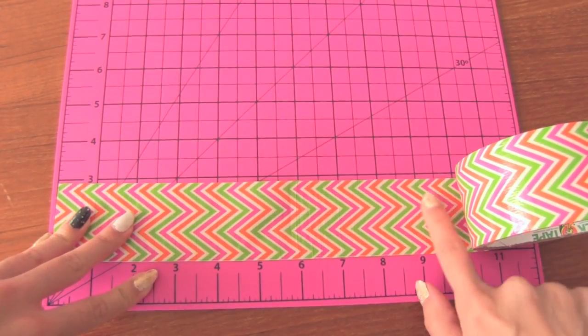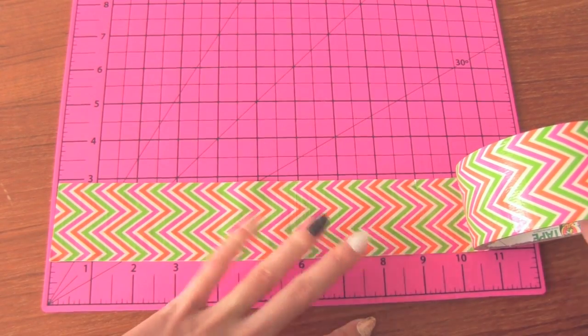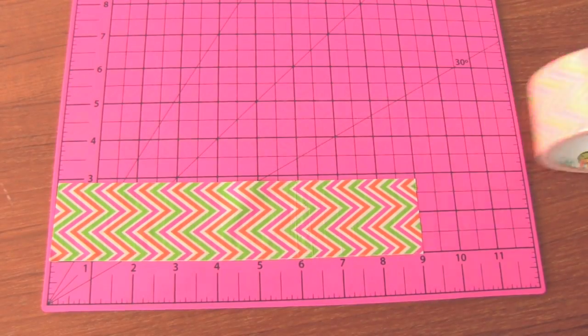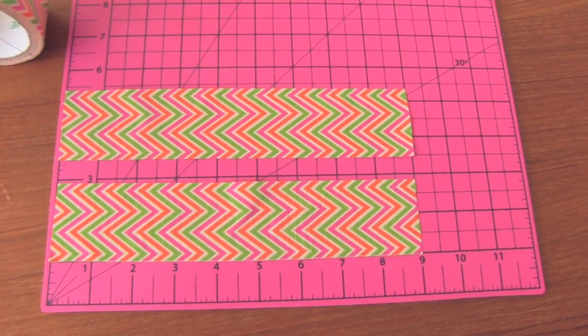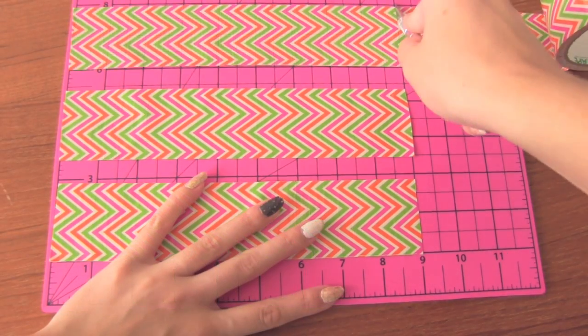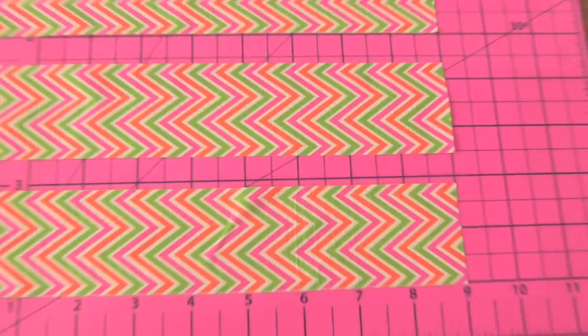Now I'm going to take the roll of duct tape that I want to show on the outside of my pencil pouch. I'm going to cut 6 strips of this tape that are each about 9 inches long. I'm making my strips longer than 8 inches right now so I can trim it once they're all attached.